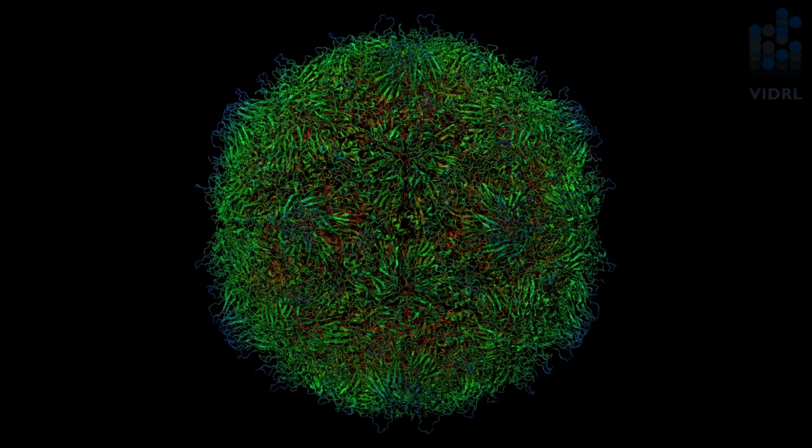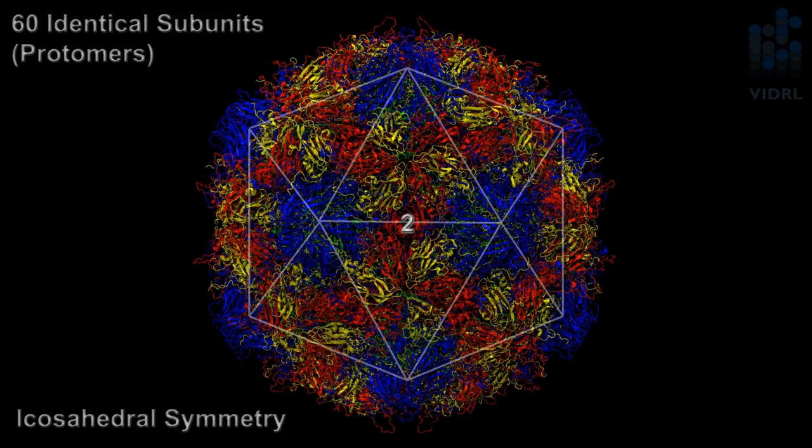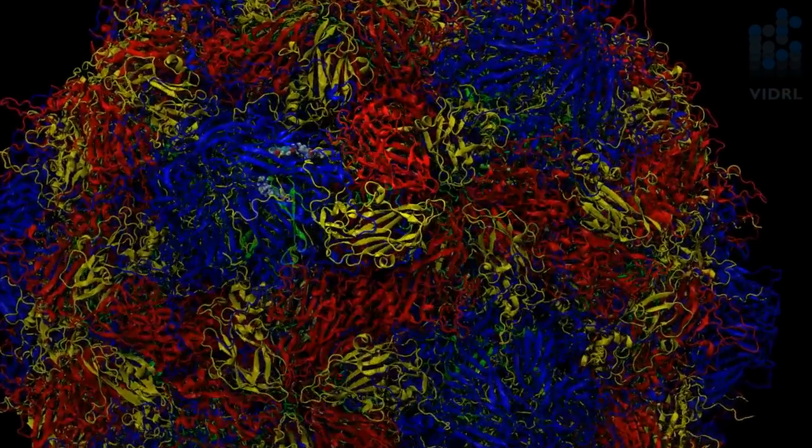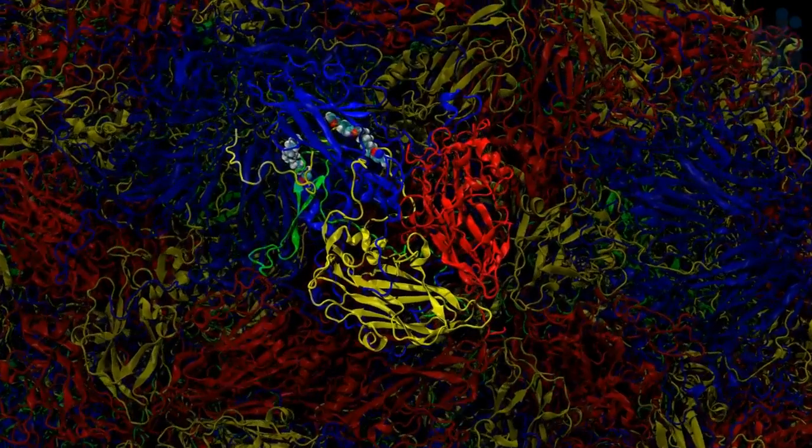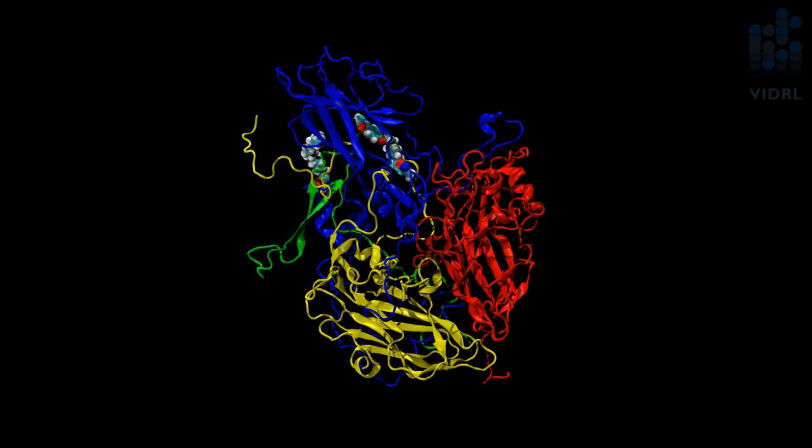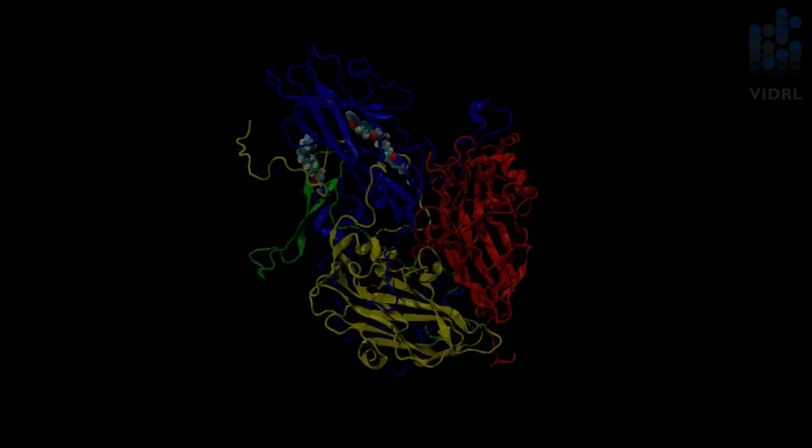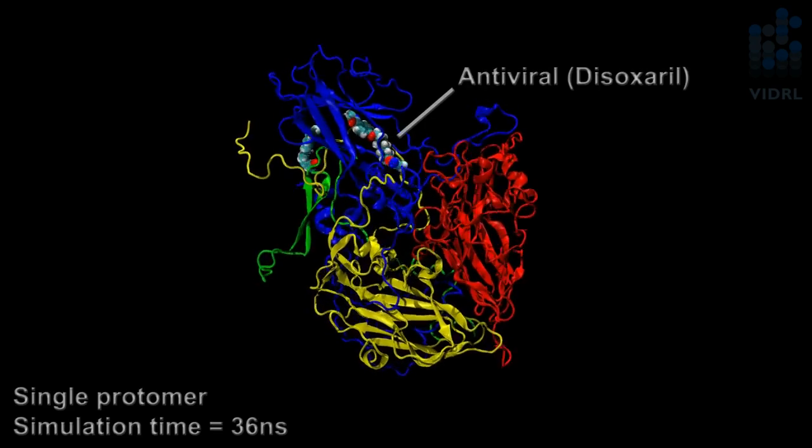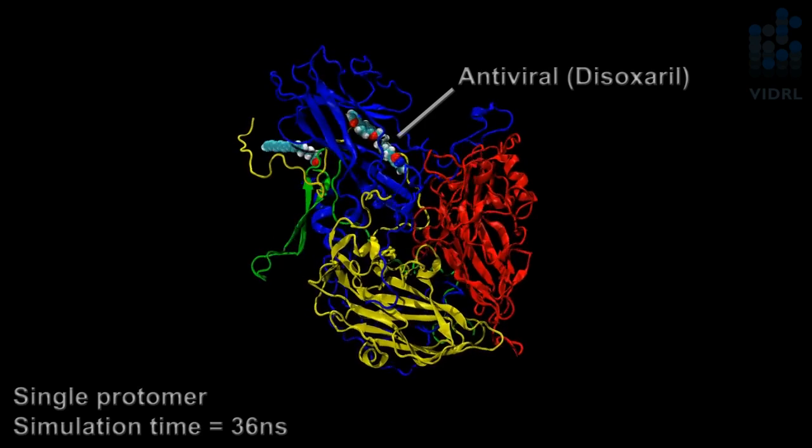The structure follows a fairly simplistic icosahedral symmetry with 60 identical subunits, also known as protomers. What we can do is take one of these protomers that we've created from our genetic sequence and recreate 60 copies and position them using simple mathematics into a virus shell. We can then load that structure into a supercomputer and examine such things as antiviral drug behavior within the virus.